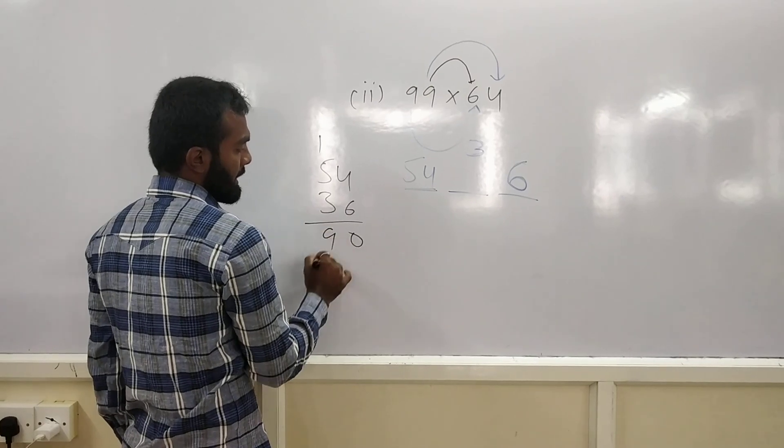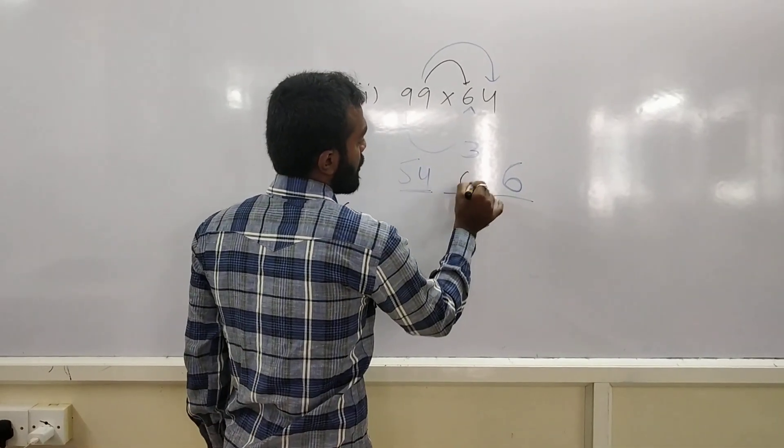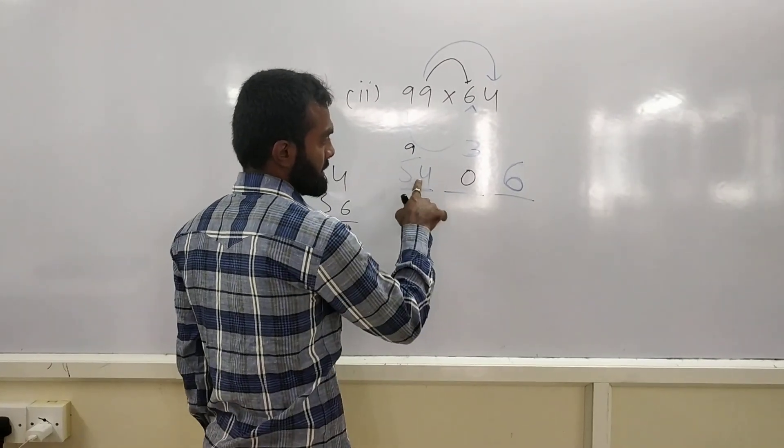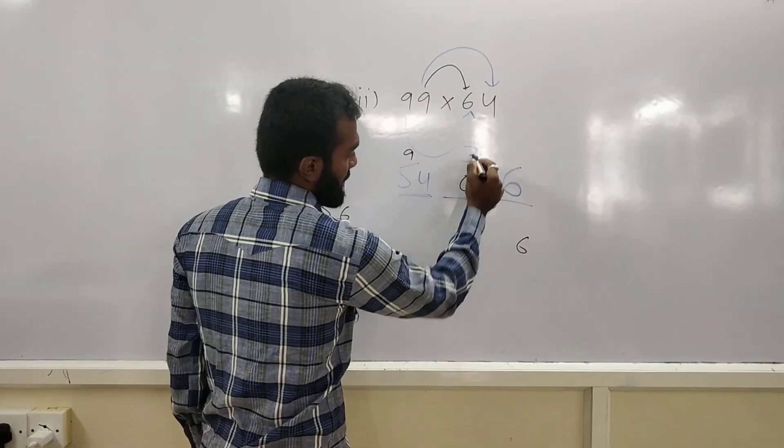And, this is 90. To get here 90. 0, and here carry forward 9. How to get this answer is? 6. 0 plus 3 is 3.